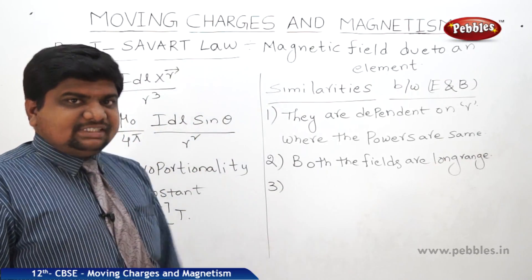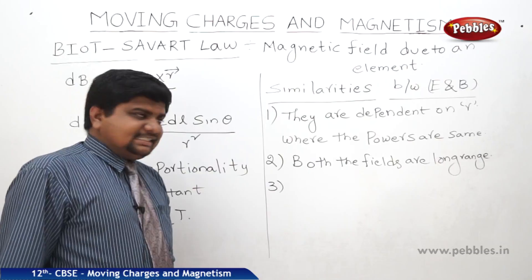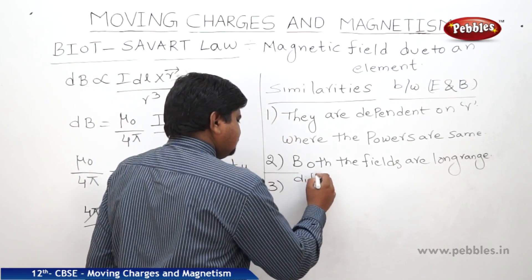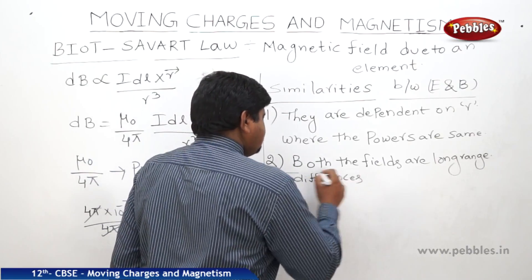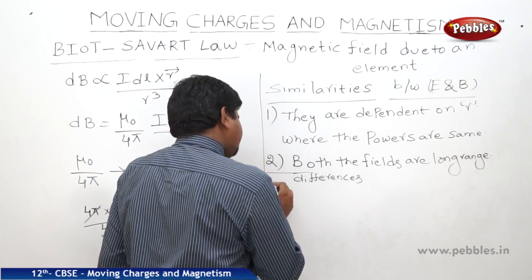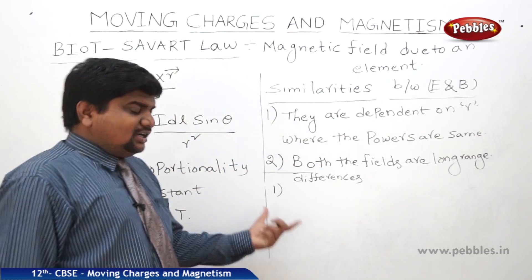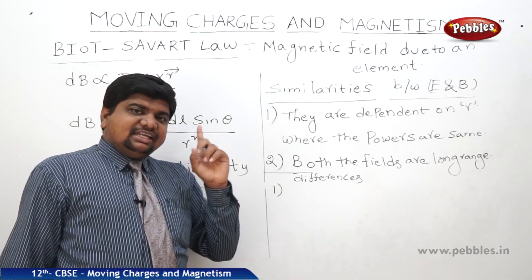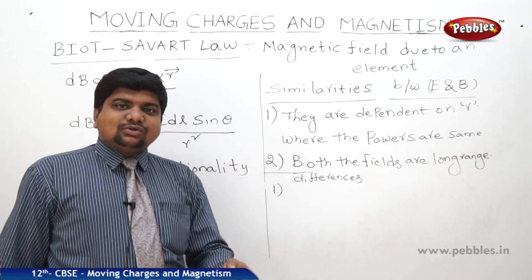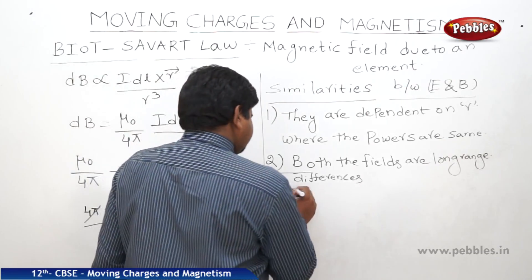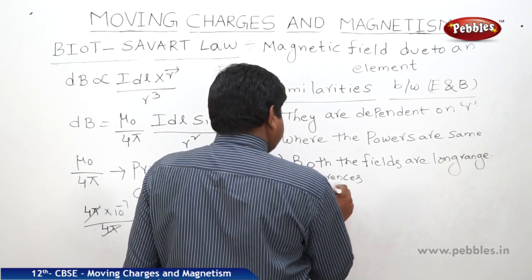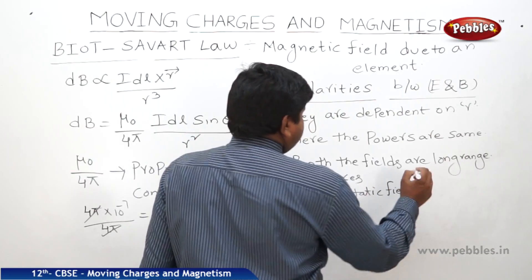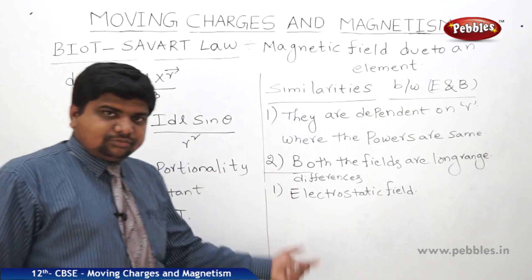What are the differences? These are the similarities. If you see the differences, we can write the first difference. So what are the first differences? Electrostatic field is due to a scalar source, nothing but the electric charge. Electrostatic field is due to the scalar point or scalar source — charge.